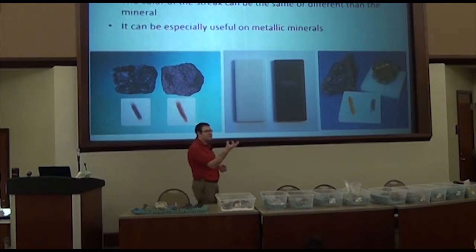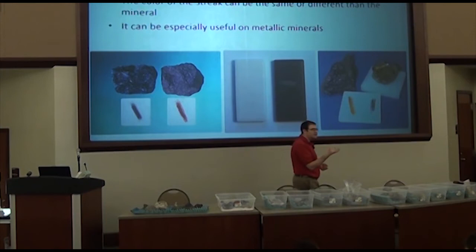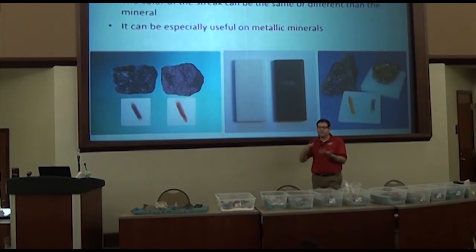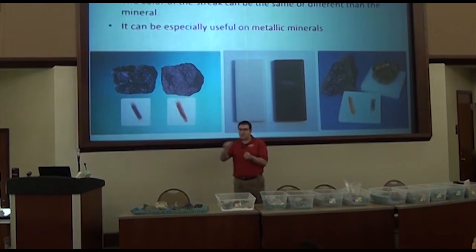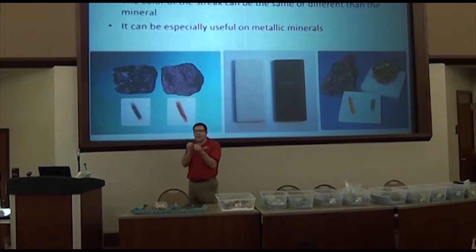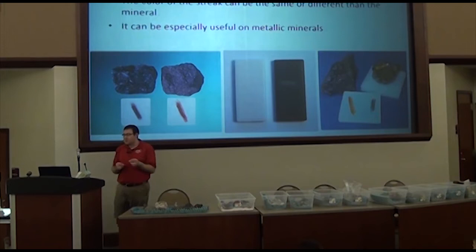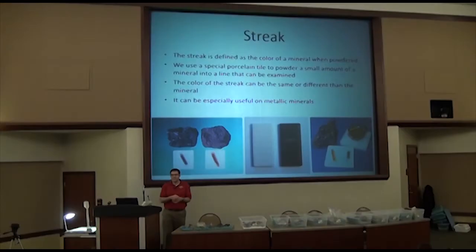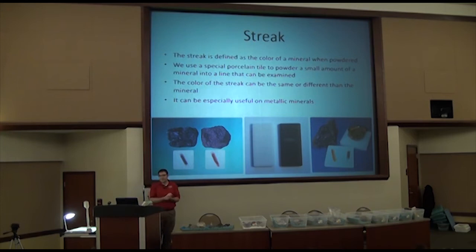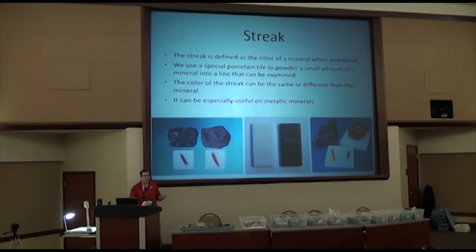Streak — the white square in your box is an unglazed porcelain tile, called a streak plate. We rub minerals on it, which grinds down the mineral a little and leaves a bit of powder. You can see what color the powder is. It's surprising that sometimes the streak color is not the color you'd expect from looking at the mineral. It's particularly helpful for metallic minerals — for instance, hematite versus magnetite look similar but have different colored streaks.